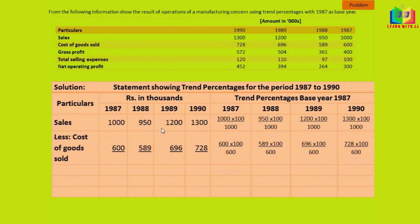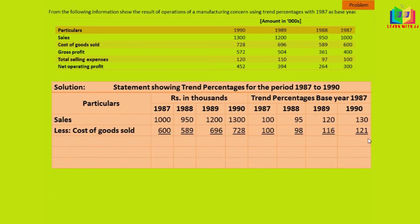Similarly, for cost of goods sold, we have to find the trend percentages. The values of cost of goods sold are: 600 for 1987, 589 for 1988, 696 for 1989, and 728 for 1990. The same way, current year divided by base year into 100. So 589 divided by 600 into 100 for 1988, 696 divided by 600 into 100 for 1989, and 728 divided by 600 into 100 for 1990.